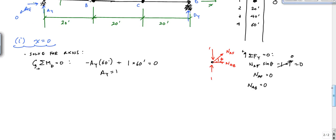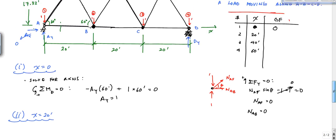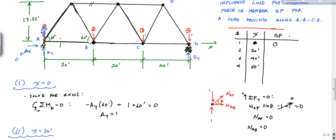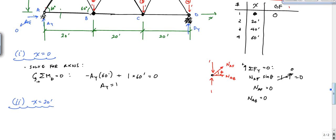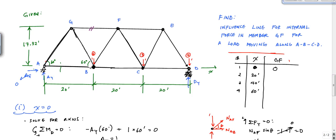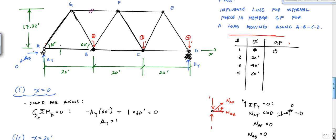Now I go to position two, where x equals 20 feet. Taking moments about D equal to zero: minus Ay times 60 feet plus one times 40 feet equals zero, giving Ay = 2/3. That makes sense — the load is closer to support A, so A carries more. Our calculation confirms it.